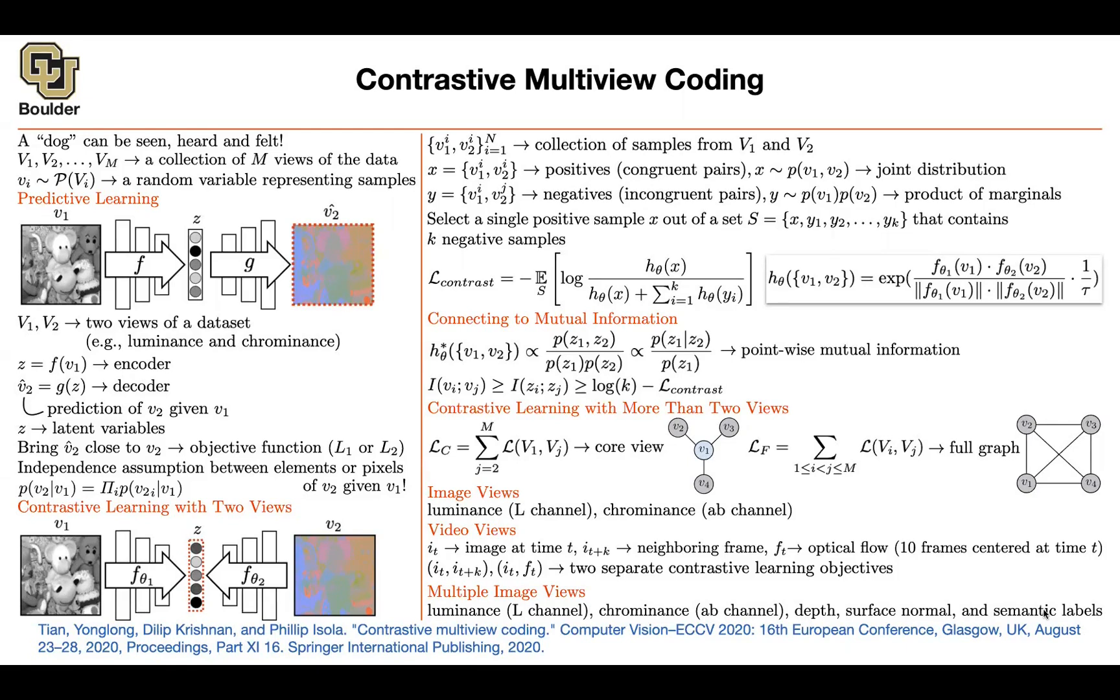Any questions about CMC, contrastive multi-view coding? Was everything clear? So the thing that I wanted to emphasize is this connection between contrastive loss and mutual information and see it mathematically why having a larger K helps in contrastive learning.